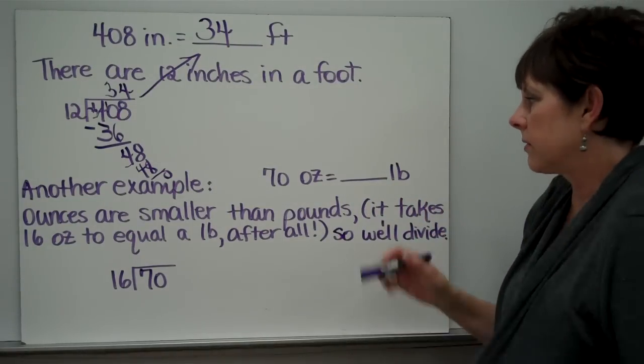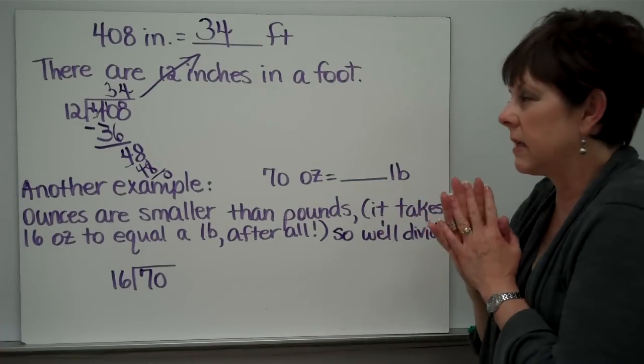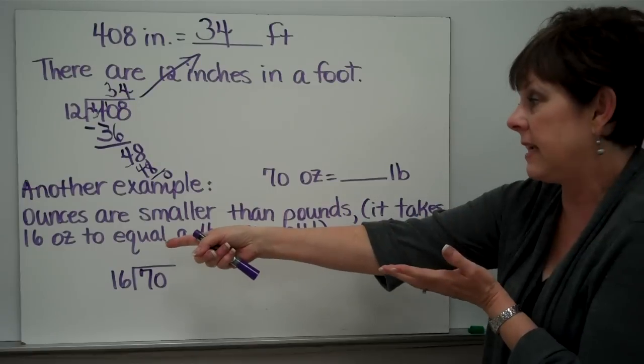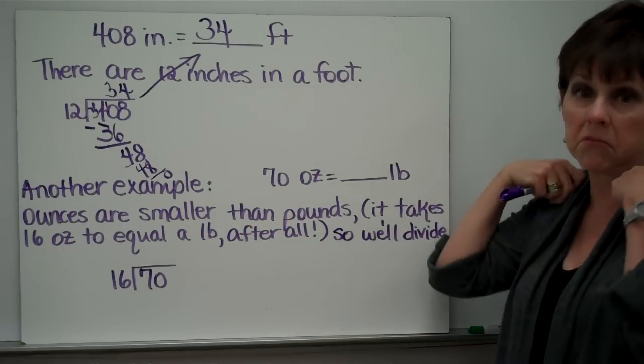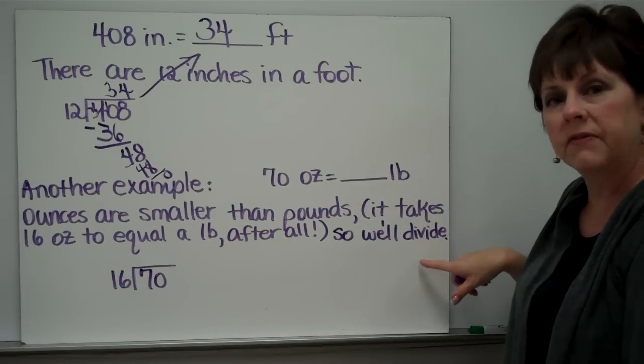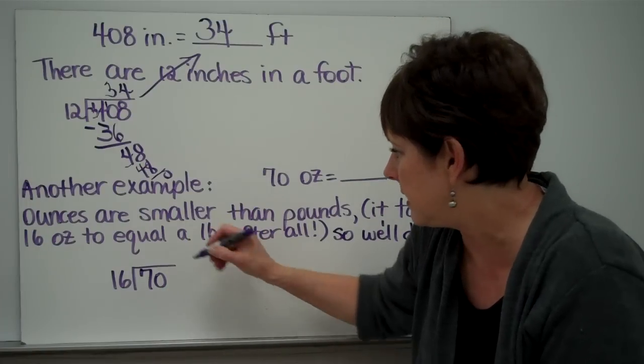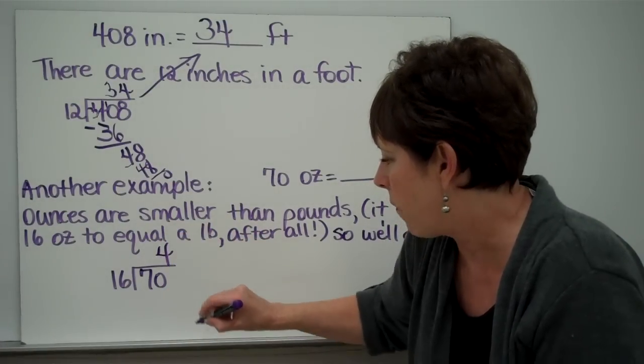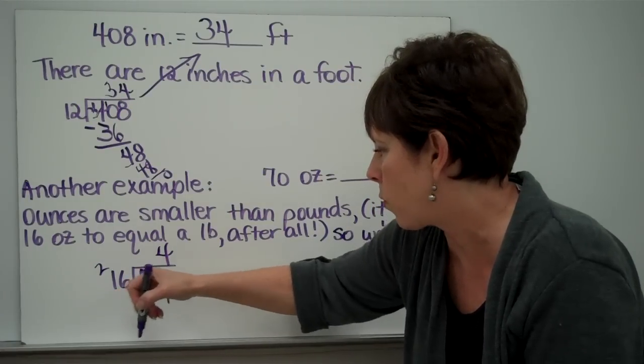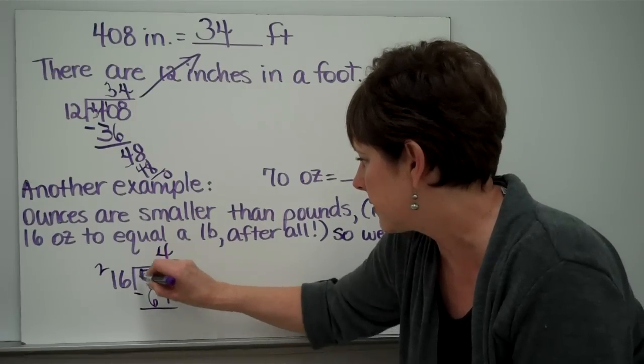Here's another example. 70 ounces is how many pounds? Let's think. Ounces are smaller than pounds. It takes 16 ounces to equal a pound, after all. So ounces are smaller than pounds, and we'll divide. 16 can be divided into 70, 4 times. 4 times 6 is 24. 4 times 1 is 4, plus 2 is 6. Subtract.